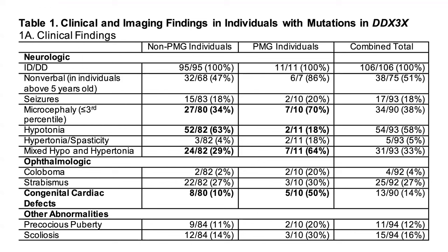Some individuals have a particular brain anatomy change called polymicrogyria, or PMG. Children who have PMG are in our assessment more likely to have a greater set of developmental challenges. We grouped individuals by PMG status and compared clinical features. For microcephaly, only a third of non-PMG children have it, whereas 70% of those with PMG have microcephaly — a very strong association that makes sense anatomically.